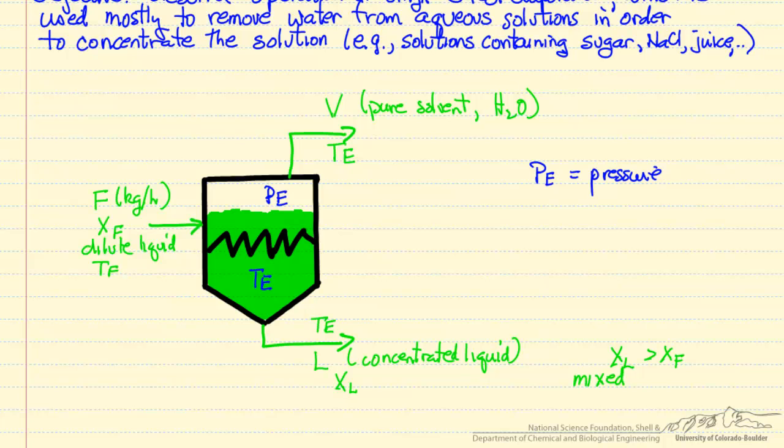The other aspect of this single effect evaporator is that we have steam coming in to cause the evaporation. So we'll have steam flow come in to the evaporator and move through, the same flow rate of steam then leaves the evaporator. So also kilograms per hour.